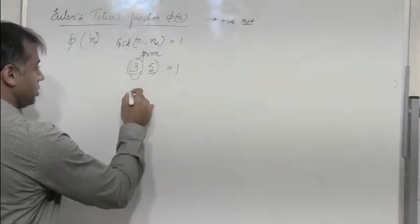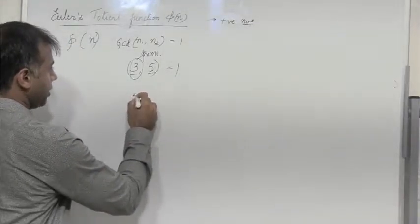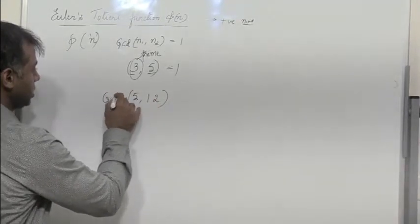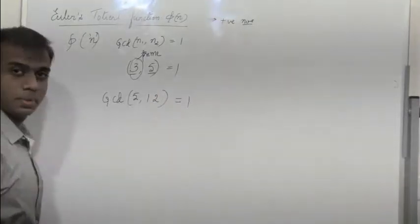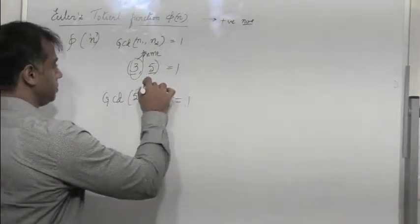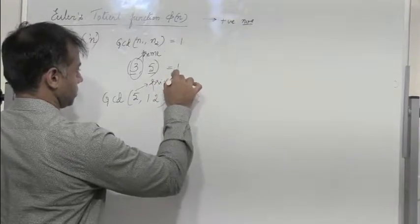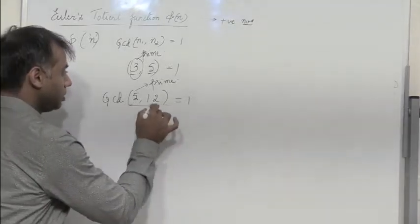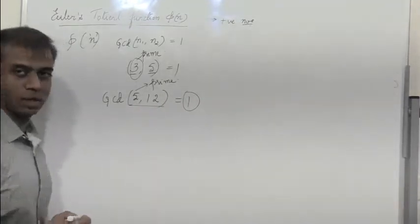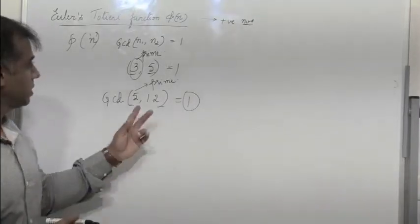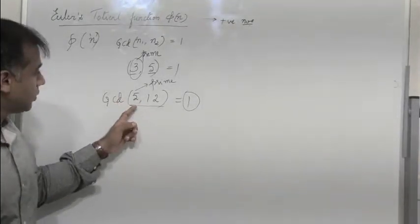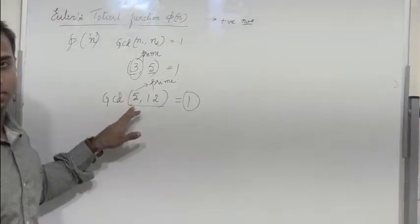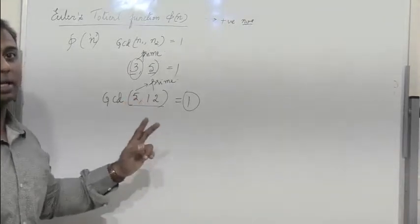Consider another case: 5 and 12. The GCD of these two is 1, because 5 is a prime number, and 12 is not prime, but the only number which divides both 5 and 12 is 1. So if we choose one number as prime and the other is not a multiple of that prime, they will definitely be relatively prime.